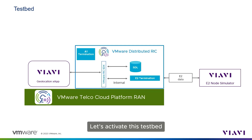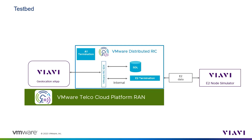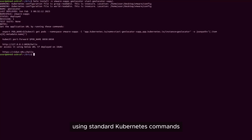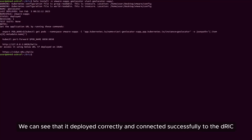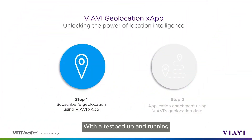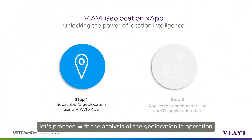Let's activate this testbed. With an already deployed VMware Distributed RIC instance, we launch the VIAVI Geolocation XApp using standard Kubernetes commands. We can see that it deployed correctly and connected successfully to the DRIC. With the testbed up and running, let's proceed with the analysis of the geolocation in operation.